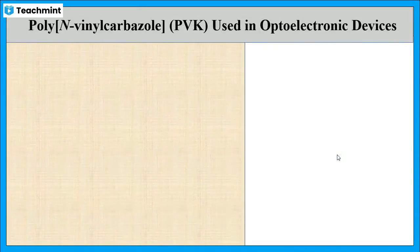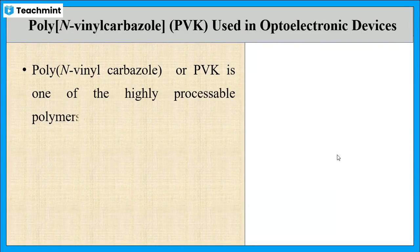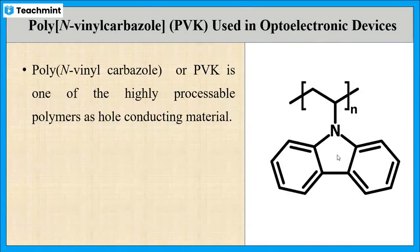One more organic material used in optoelectronic devices is poly-N-vinylcarbazole, or PVK. It is one of the highly processable polymers used as a hole conducting material. Now let us see the properties of PVK.